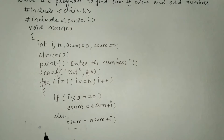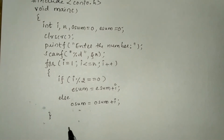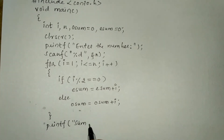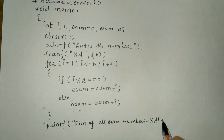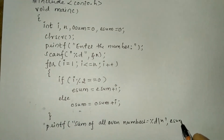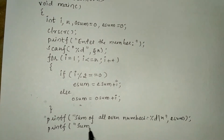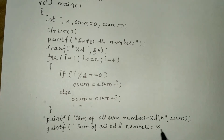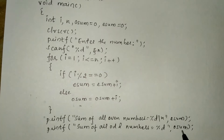For the respective opening brace we put the closing brace. Now let us print both sums. In a printf statement: 'Sum of all even numbers = %d\n' with esum as the variable. The next printf statement: 'Sum of all odd numbers = %d' with osum as the variable.